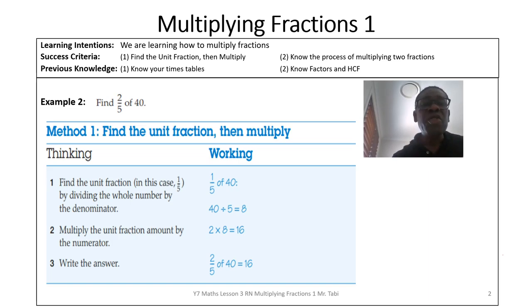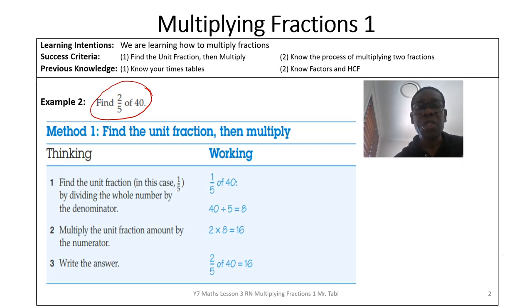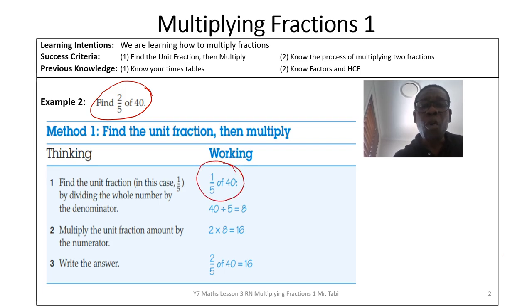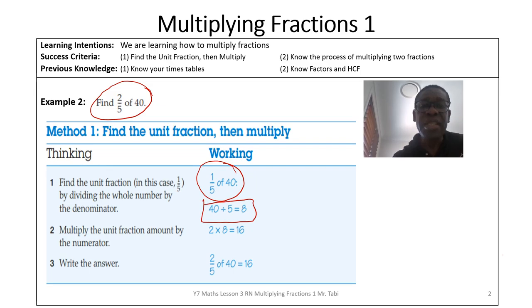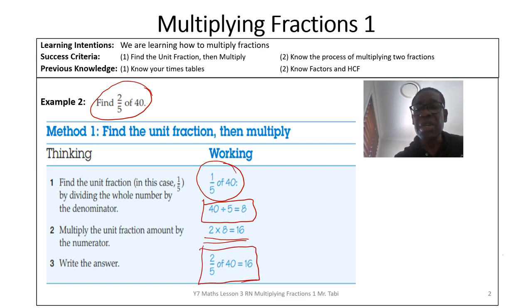Now we have two-fifths of 40. Using Success Criteria 1, where we find the unit fraction, you first find one-fifth of 40. The question says two-fifths of 40, but you want to find the unit fraction of 40 first. So you do one-fifth of 40, which is simply 40 divided by 5, which gives you 8. Then you take the numerator, which was 2, and multiply by 8, and that gives you 16. So two-fifths of 40 gives you 16.